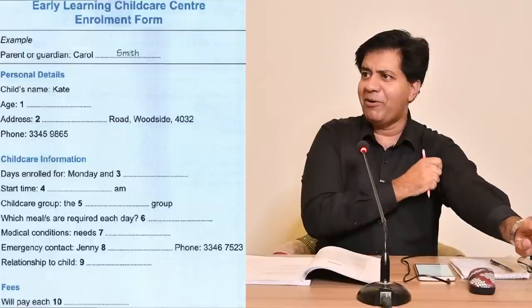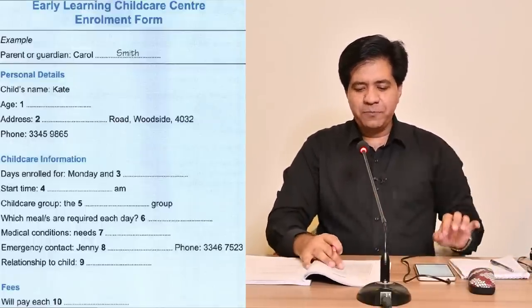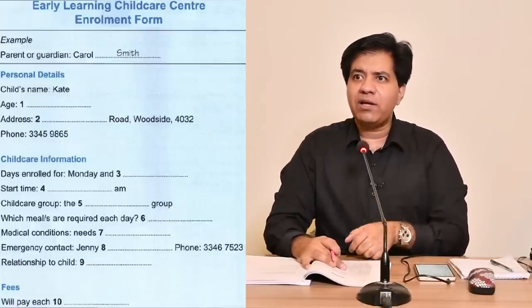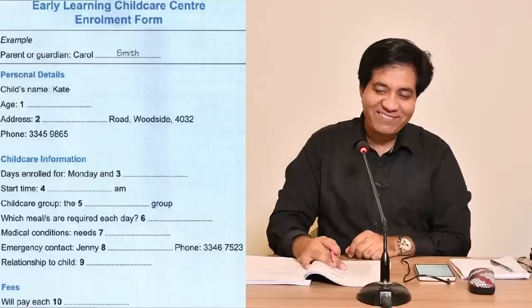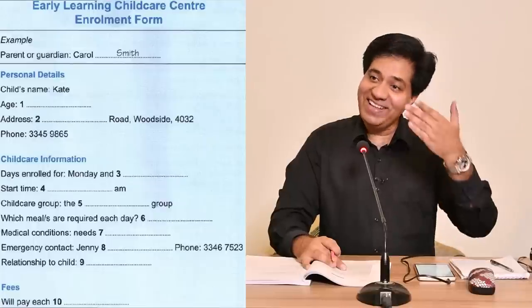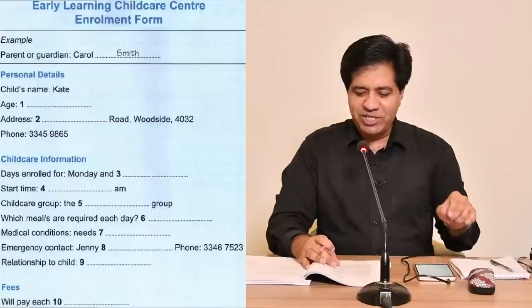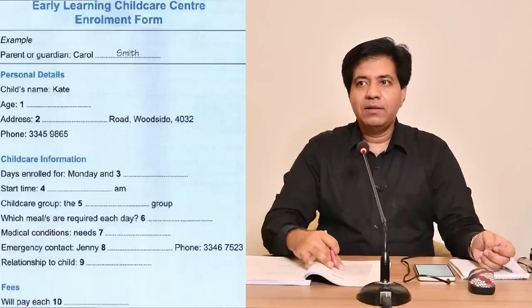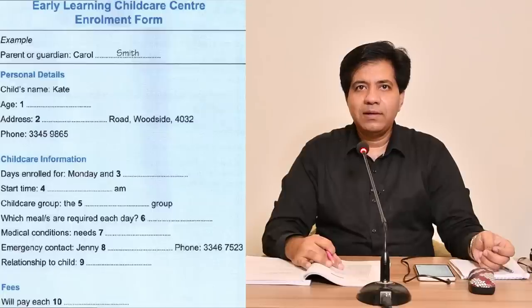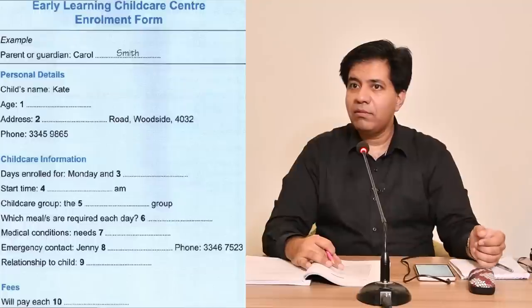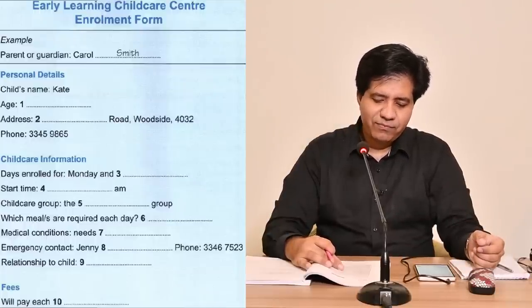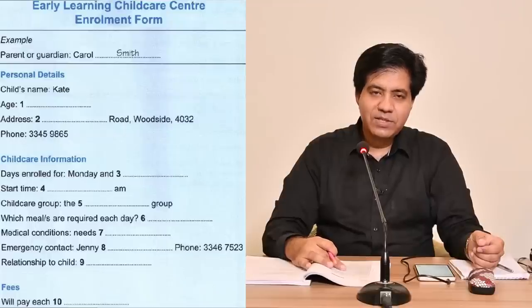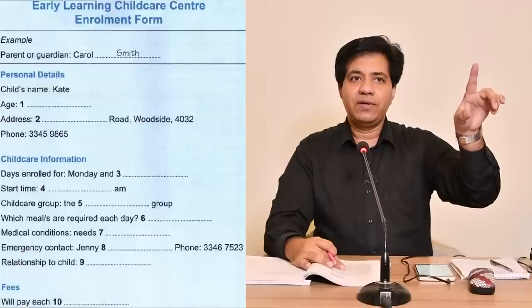The next question is address — dash road — meaning the name of the road. They're going to tell you something like 'Band Road' or another English road name. Then they said 'Woodside' and '4032.' Audio plays: 'What's your address?' 'It's 46 Wombat Road — that's W-O-M-B-A-T — Woodside 4032.' And what's the phone number? Oh, it's 3345 9865.